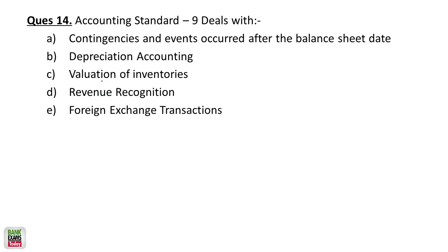You need to remember the numbers of all the accounting standards. Accounting Standard 9 deals with revenue recognition. AS2 is valuation of inventory, AS10 is depreciation and fixed assets, AS9 is revenue recognition — and if you know the answer, just tell me the name. The correct answer is revenue recognition.